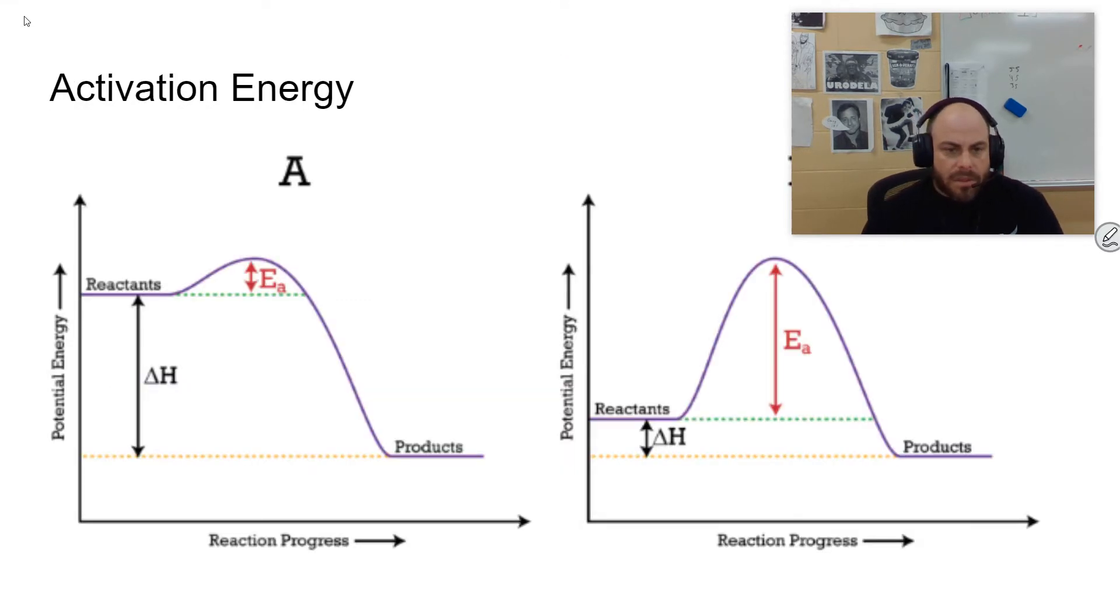Enzymes speed up reactions by lowering the activation energy of that reaction. The activation energy is the amount of energy necessary to begin a reaction, and enzymes lower that activation energy, thus speeding up that reaction.